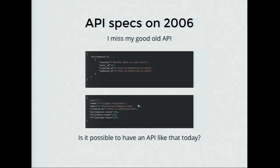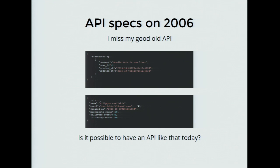I miss my good old API. Back in 2006, I think the first JSON API for a Twitter-like app would have been simple — no hypermedia, no actions, no links, just data. And honestly, I liked that, and I miss it. So: is it possible to build that today but still have hypermedia? Is it possible to have a response that's super easy for even the human eye to understand, easy for the client to parse, and still provide hypermedia to the client?